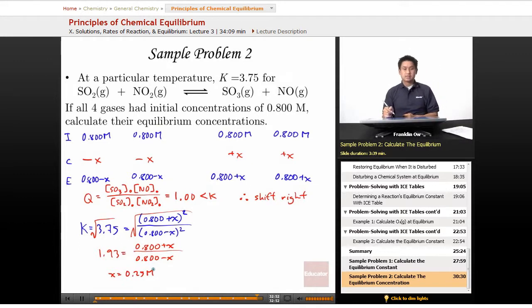And all we do next is simply plug it back into all of the expressions at equilibrium. So the concentration of SO3 at equilibrium is equal to the concentration of NO at equilibrium. And that's going to be 0.800 plus 0.25. I'll let you guys do the sum.